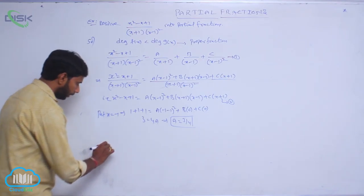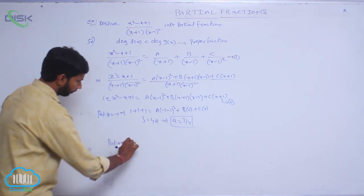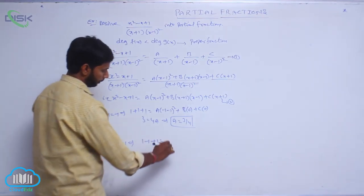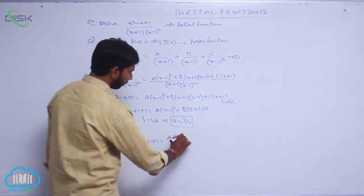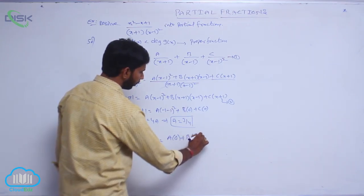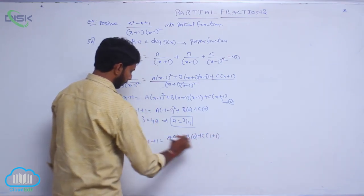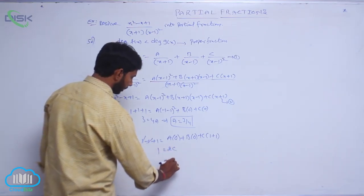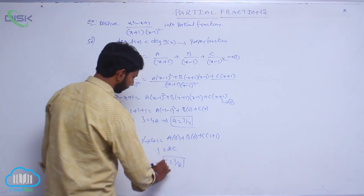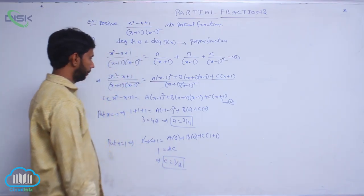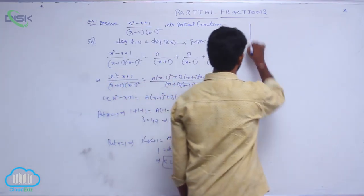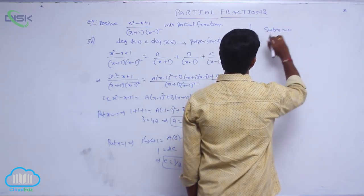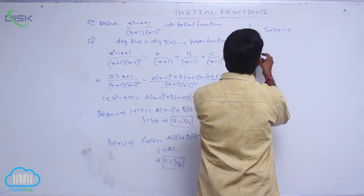Next, put x equal to 1: 1 minus 1 plus 1 equals A of 0 plus B of 0 plus C of 1 plus 1. The minus 1 plus 1 cancels, giving 1 equals 2C, so C equals 1 by 2.